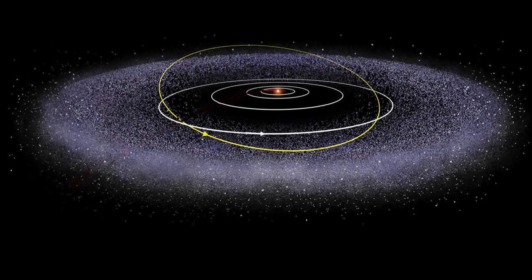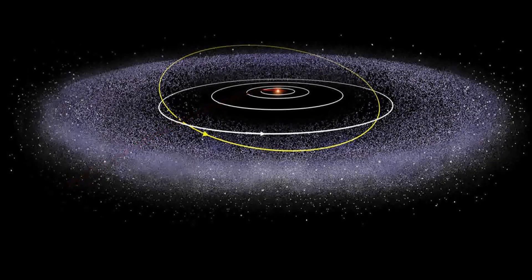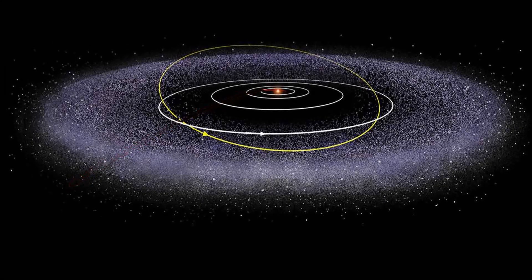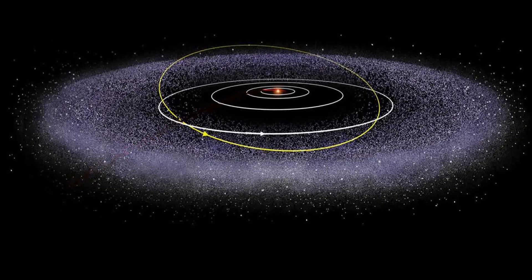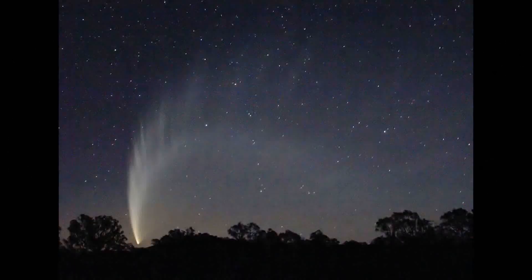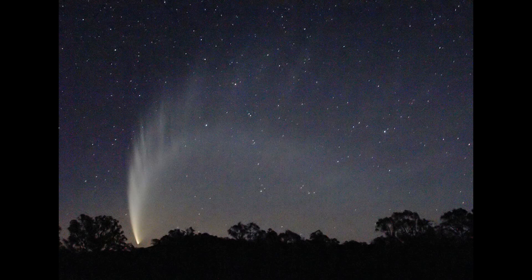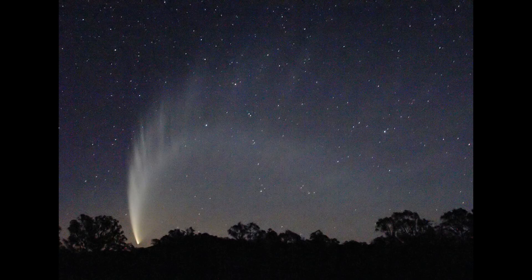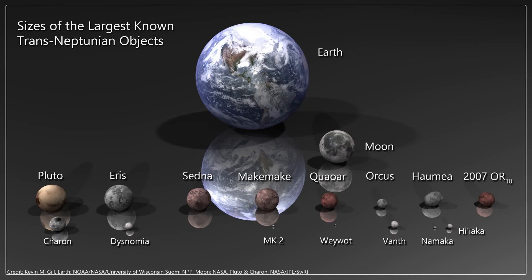Just beyond Neptune lies the Kuiper Belt, a donut-shaped halo of icy objects which includes the dwarf planet Pluto. This belt, now being explored by spacecraft for the first time, is also home to short period comets that journey to the inner solar system once every 200 years or so. This region might also house at least one unseen massive world.